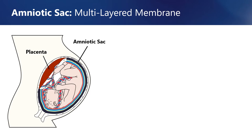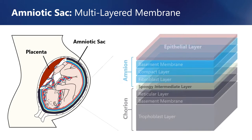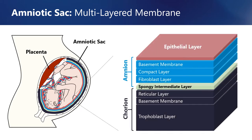In general, placental allografts refer to membranes that are derived from the amniotic sac. As shown in this illustration, the amniotic sac consists of two main membranes: the amnion and the chorion. The amnion is the innermost membrane with an epithelial layer that lines the inside of the amniotic sac. The chorion is the outermost layer facing outward toward the uterine environment. Both the amnion and chorion membranes are composed of a series of distinct tissue layers.